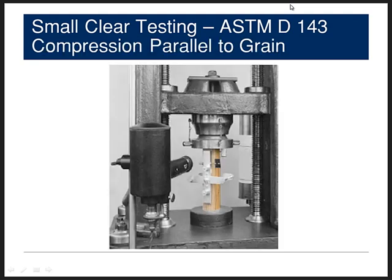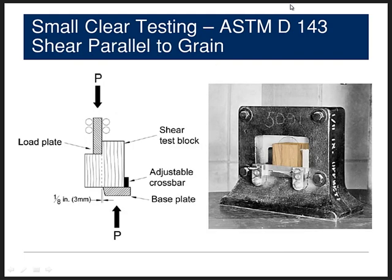Here's a picture of a small clear compression parallel to the grain sample. You can see the wood-colored sample in the test machine. The primary method uses a 2 inch by 2 inch by 8 inch long sample. In the secondary method that piece would be just 1 inch by 1 inch by 4 inches long. This is a test that we have done at the Wisjani lab.